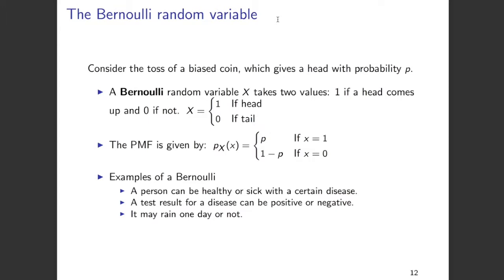Some examples of a Bernoulli random variable are as follows. For example, a person can be healthy or sick with a certain disease with a certain probability, and you can model this using a Bernoulli random variable. Similarly, a test result for a disease can come out to be positive or negative — once again, this can be modeled as a Bernoulli random variable. There are many other cases in which Bernoulli random variables can be used.